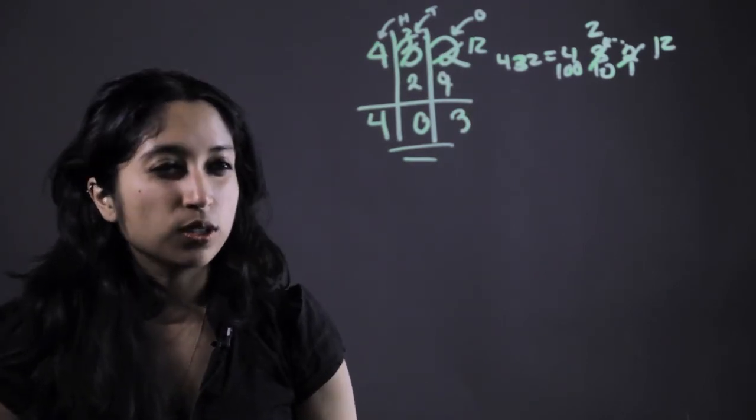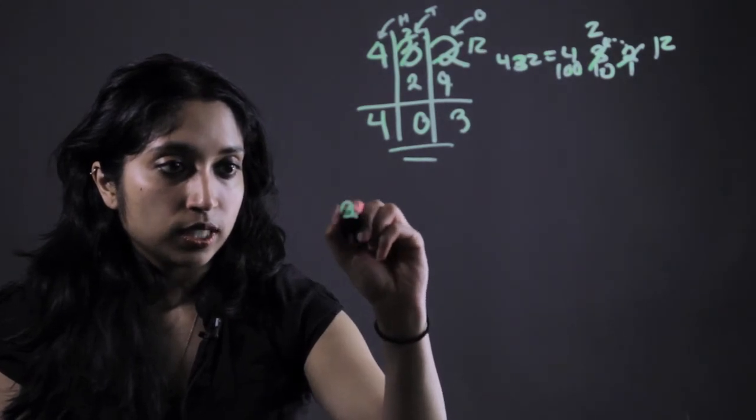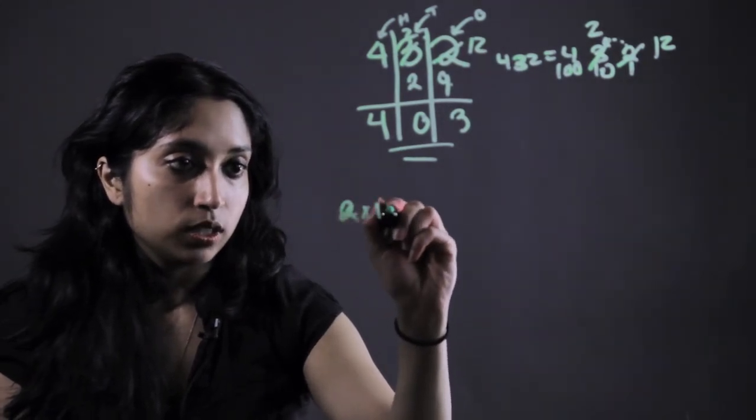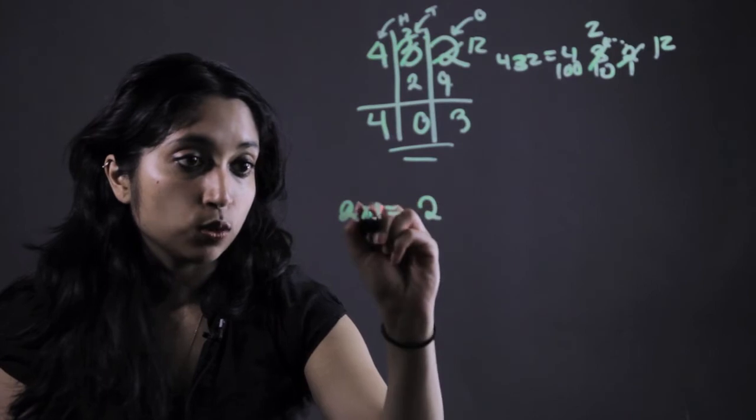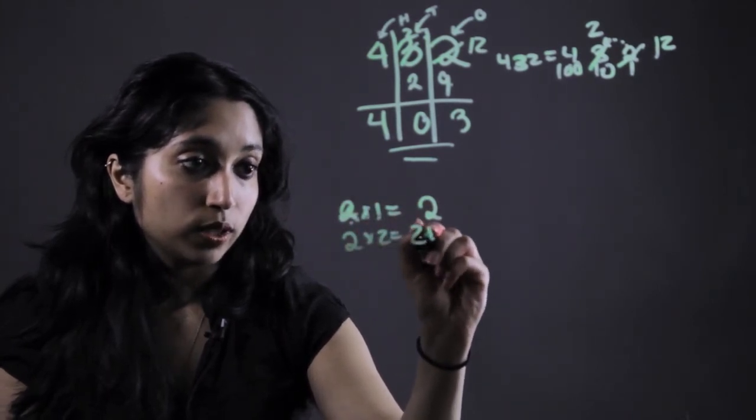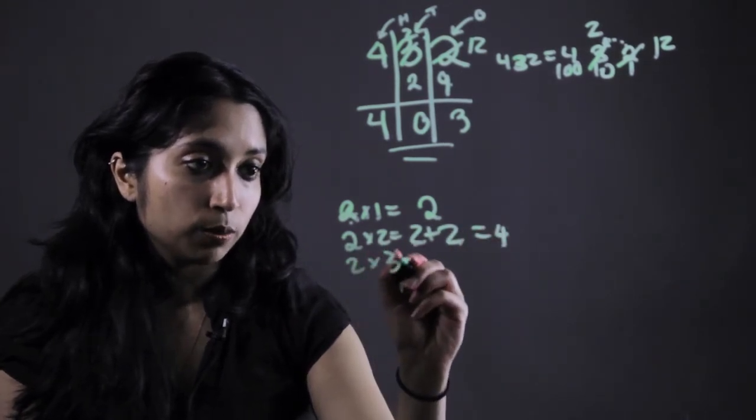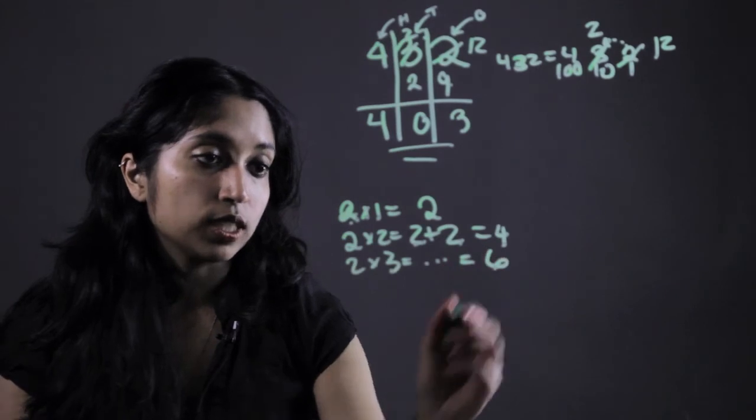For multiplication, they should already also have the basics kind of down. So for instance, 2 times 1 is equal to 2 because that's one group of 2. 2 times 2, that's going to give us 2 groups of 2 which is going to be 4. 2 times 3 similarly is going to give us 6.